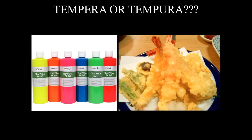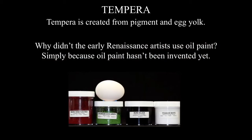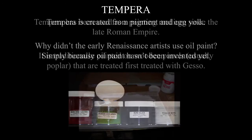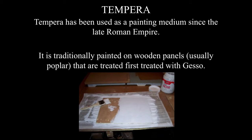Be careful with how you spell 'tempera' because spell check will often change it to 'tempura' — you don't want to make your teacher hungry reading papers about using tempura paint. Traditional tempera, not the poster paints we'd buy today, is created with pigment and egg yolk. Tempera has been used as a painting medium since the late Roman Empire, particularly on illuminated manuscripts, and is painted on poplar wood panels treated with gesso.